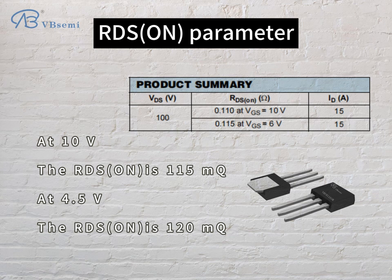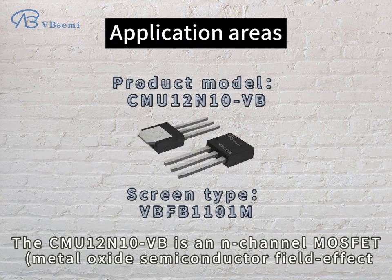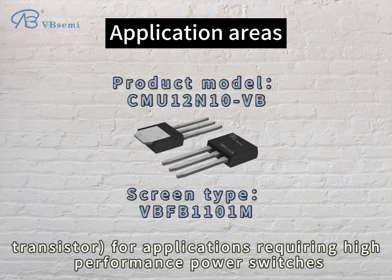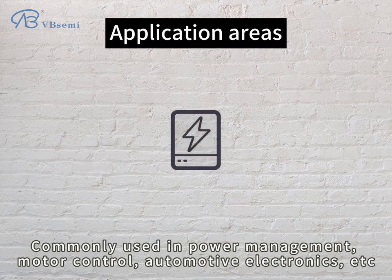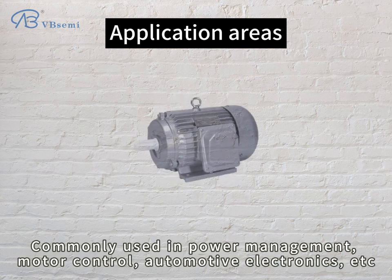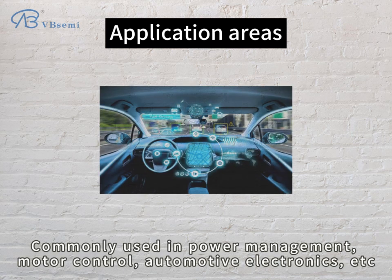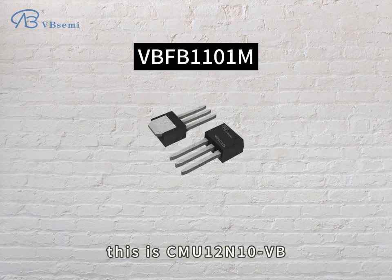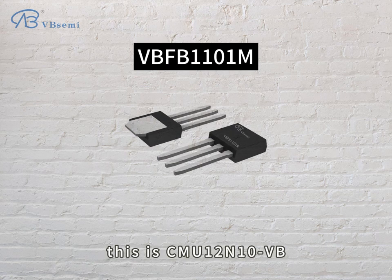The CMU 12N10VB is an N-channel MOSFET — a metal oxide semiconductor field effect transistor — for applications requiring high performance power switches. It is commonly used in power management, motor control, automotive electronics, and more.